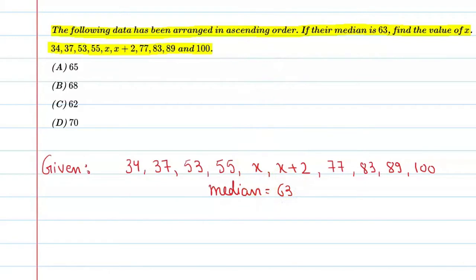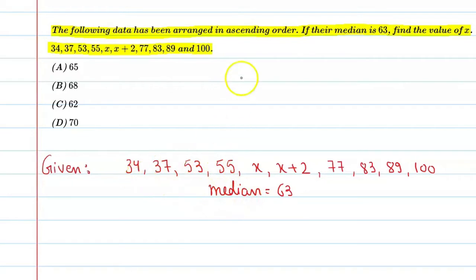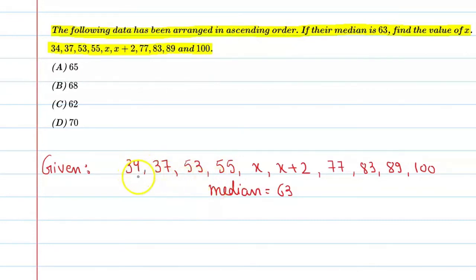So देखिए, जब भी हमें इस तरह का question मिलता है, तो आप देख सकते हैं यह data जो है ungrouped form में है. और जब data हमारे पास ungrouped form में हो और question belong करता हो median से, तो सबसे पहले हमें order में arrange करना होता है, जो कि यह already order में है ही. दूसरा हमें यह देखना होता है कि number of observations कितनी हैं.